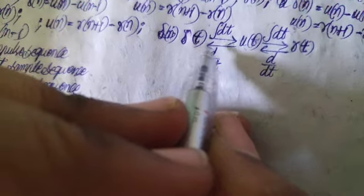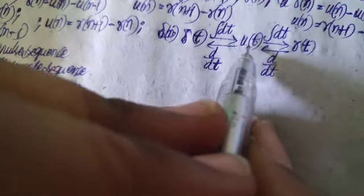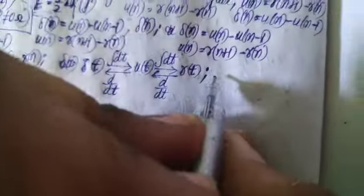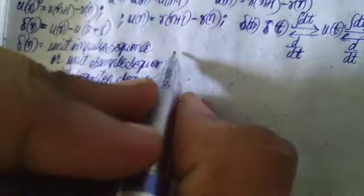And when you take the derivative of the unit step signal we get the impulse signal. So this is how you can convert from one type of signal to another. Now let us get into the properties of the impulse signal.